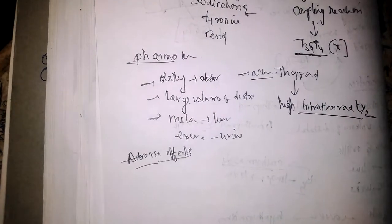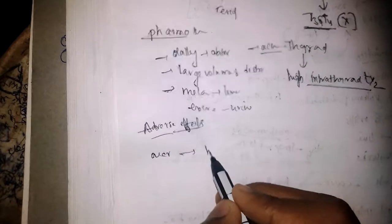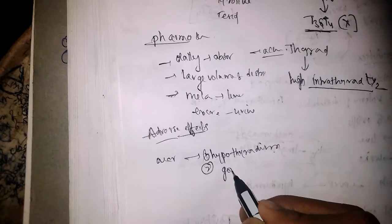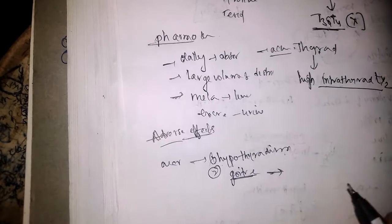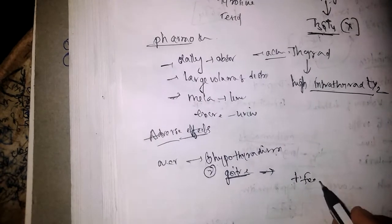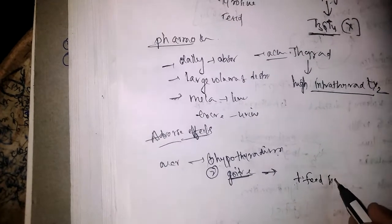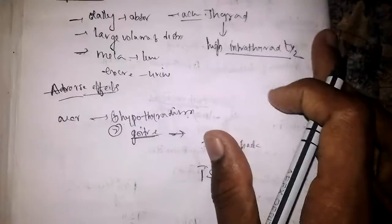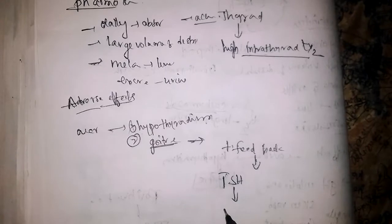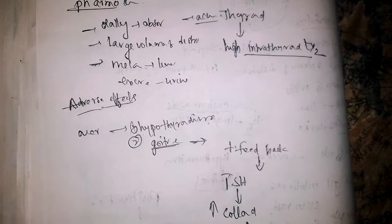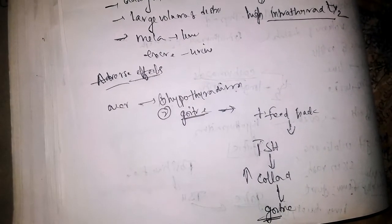If you give over-treatment, there will be hypothyroidism and goiter. When T4 and T3 levels decrease in the blood, there is activation of a positive feedback mechanism. This results in increased production of TSH, which leads to increased synthesis of colloid in the thyroid gland, causing goiter.